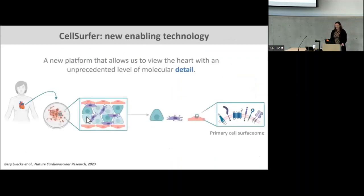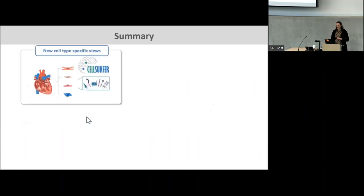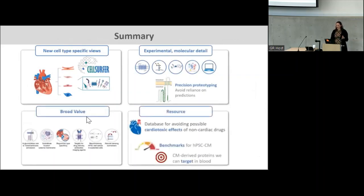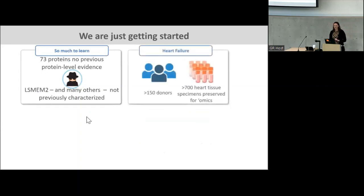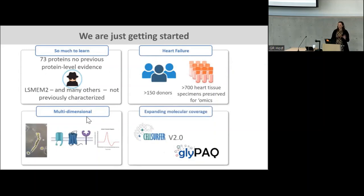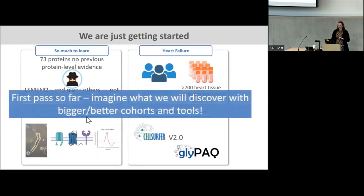In summary, the Cell Surfer Platform is a new enabling technology that allows us to look at the heart with a new level of molecular detail that you can't get by other methods. We can apply this to heart cells, get new views, generate lots of experimental data with broad value. We now have lots of resources and can even inform drug development for non-cardiac diseases — giving information to help folks prioritize which drugs to potentially avoid because their targets are present in the human heart. We're just getting started. We have lots of new proteins we don't know anything about, lots of new samples from biobanking, and other technologies that allow us to see other parts of these cell surface proteins. This is really just the first generation of these technologies, and we're already finding lots of new things not previously described in the heart.